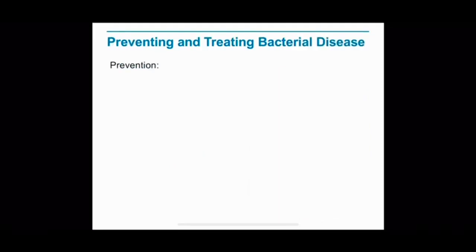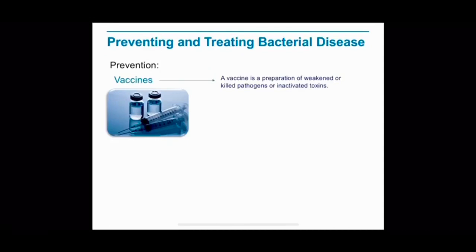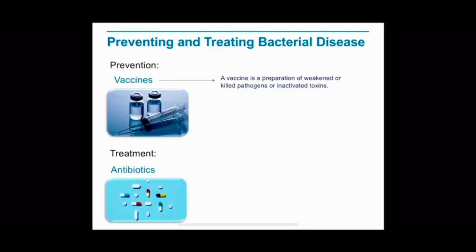To prevent bacterial diseases, the use of vaccines is very important. A vaccine is a preparation of weakened or killed pathogens or inactivated toxins. When injected into the body, a vaccine promotes the body to produce immunity to that specific disease. Immunity is the body's ability to destroy pathogens or inactivated toxins. To treat bacteria, drugs such as antibiotics — for example, penicillin — can be used to block the growth and reproduction of bacteria. Antibiotics disrupt proteins or cell processes specific to the bacterial cell, and in that way, they do not harm the host cell.